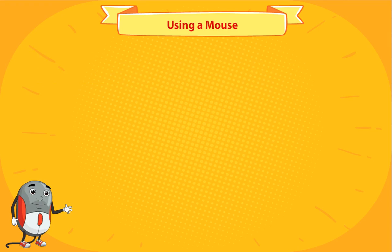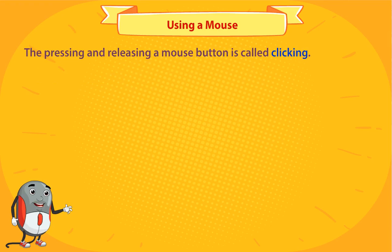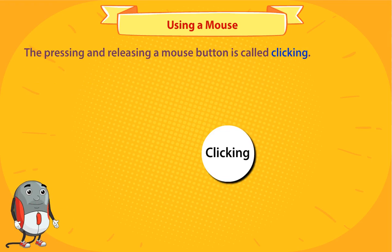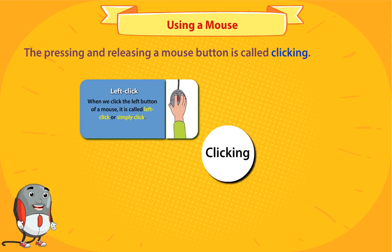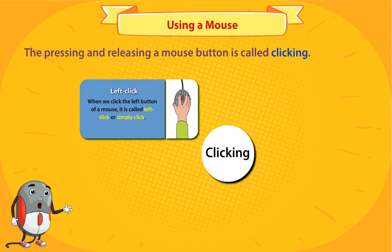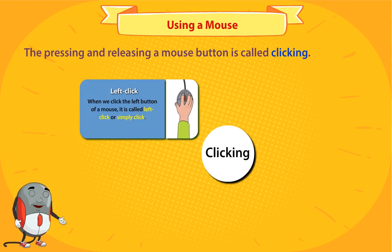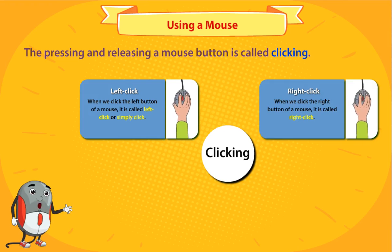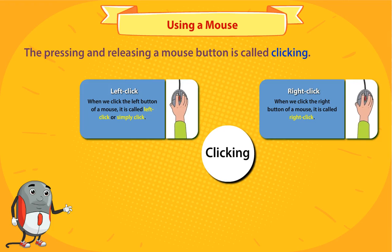Using a mouse. The pressing and releasing of a mouse button is called clicking. Left click: when we click the left button of a mouse, it is called left click or simply click. Right click: when we click the right button of a mouse, it is called right click.